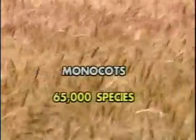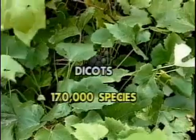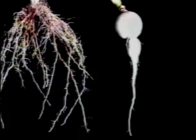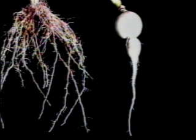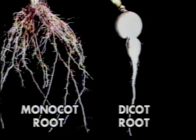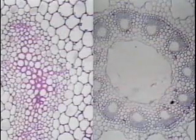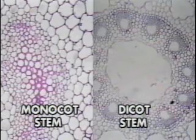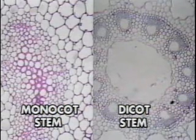About 65,000 species of angiosperms are monocots, while 170,000 are dicots. Monocots tend to have broadly spread out fibrous roots, while dicots tend to have more vertical tap roots. The vascular bundles of monocots are spread out throughout the stem, whereas those of dicots are arranged in a ring around the stem.